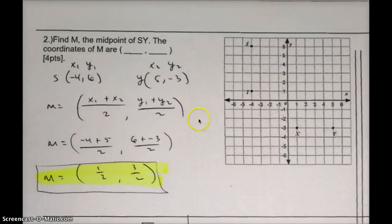Turn the page. Find M, the midpoint of SY. The coordinates of M are blank, comma, blank. So here's S and here's Y. You need to figure out the midpoint. So essentially, all you have to do is write down the two coordinates for S and Y. So S is negative 4, positive 6, and Y is positive 5, negative 3. You're going to add your X coordinates together and divide it by 2. Essentially, you're finding the average. So negative 4 plus 5 gives you a positive 1. 1 divided by 2 is 0.5, but just leave it as a fraction. To find the midpoint of your Y coordinates, 6 plus negative 3, you're just adding those two together. You'll get positive 3. So 1 half, comma, 3 halves, or 0.5 and 1.5.